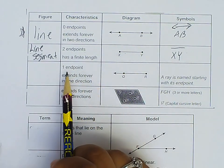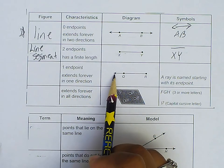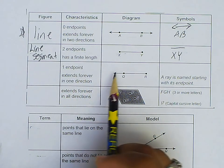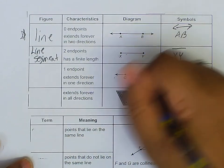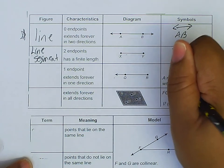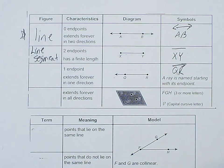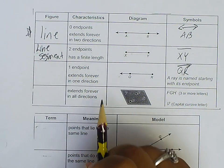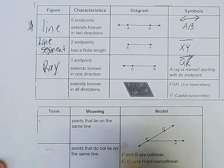Let's look at the third one here. It has one endpoint, extends forever in one direction. So you can see it has one arrow here. This is actually called a ray. A ray is named starting with its endpoint. So it's what we call QR. Or you can call it RQ. So it's a ray. I forgot the word ray, so make sure everyone write the word ray right there.